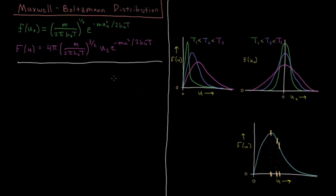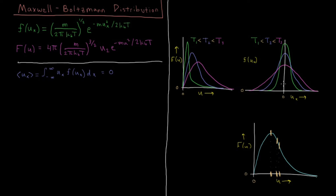Some values we can calculate given these distributions. We can calculate the average velocity component in a given direction — the expectation value of ux. That would be the integral from minus infinity to infinity of ux times f(ux) dux. If you take that distribution, multiply it by ux, and integrate from minus infinity to infinity, you get zero.